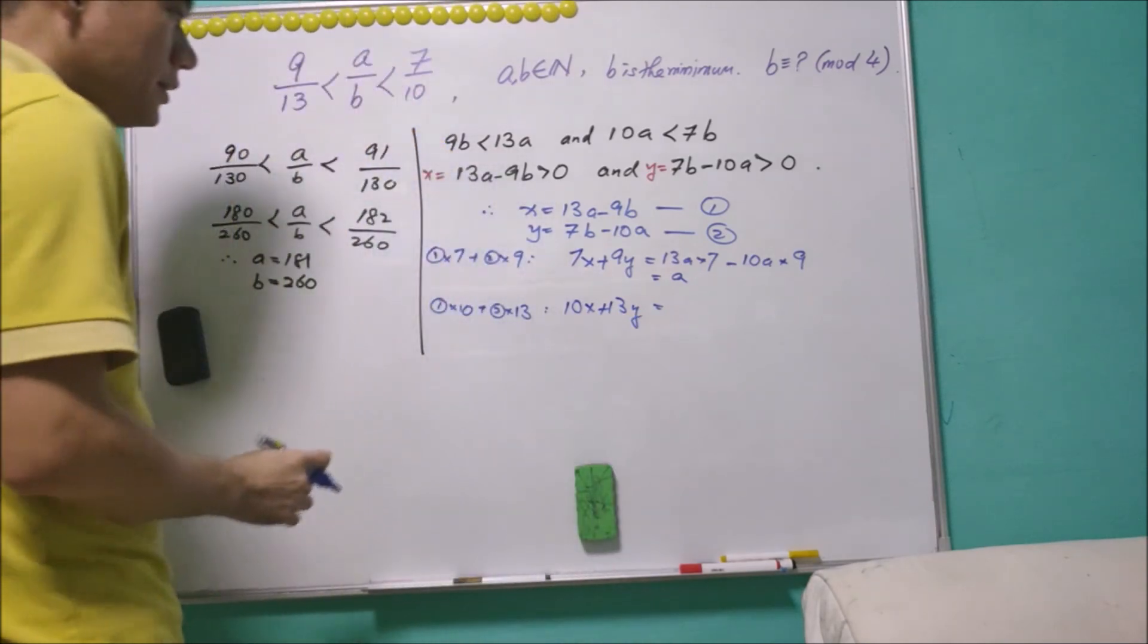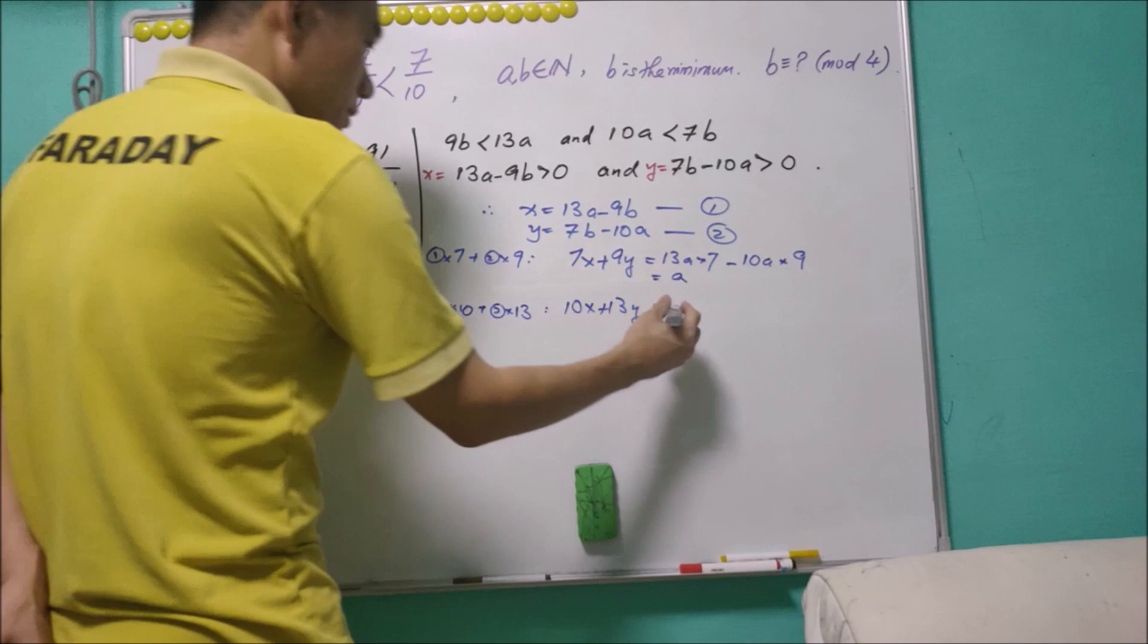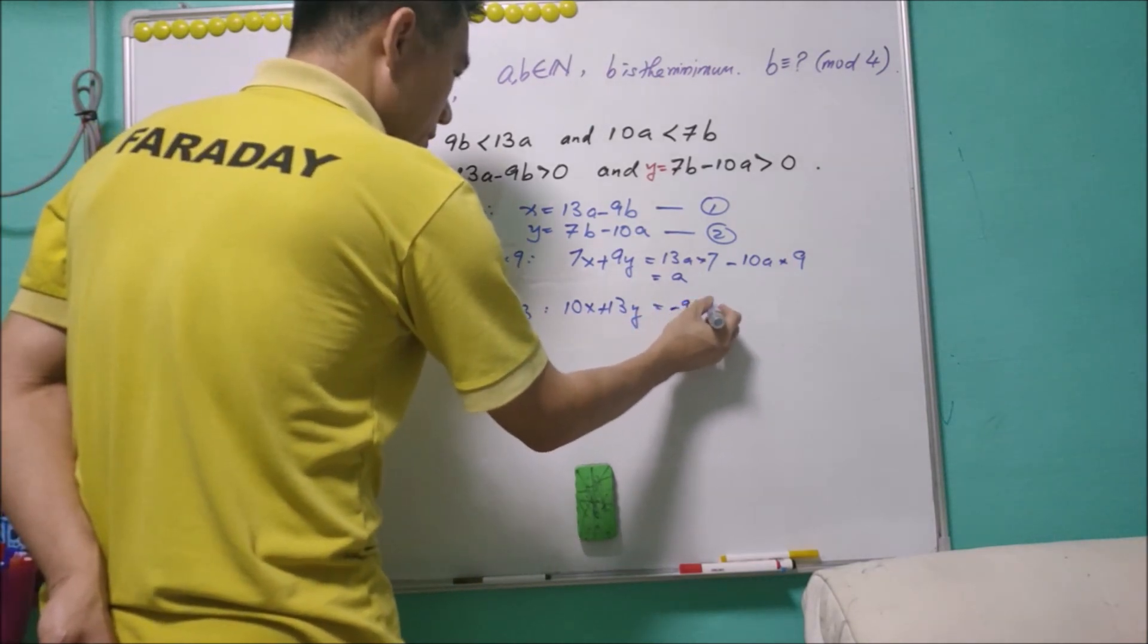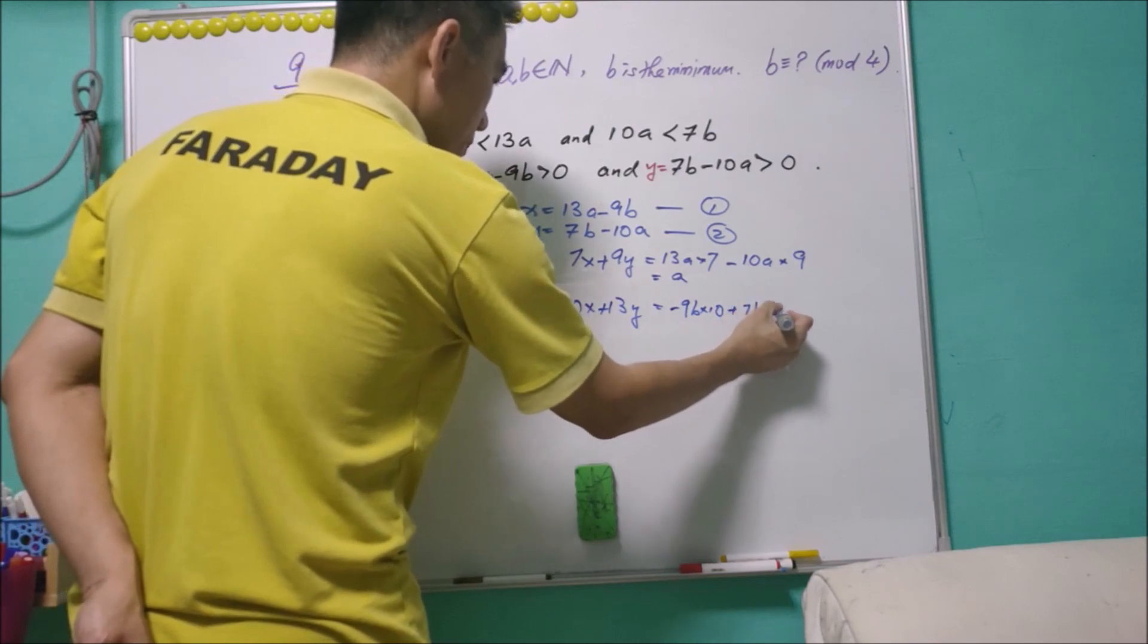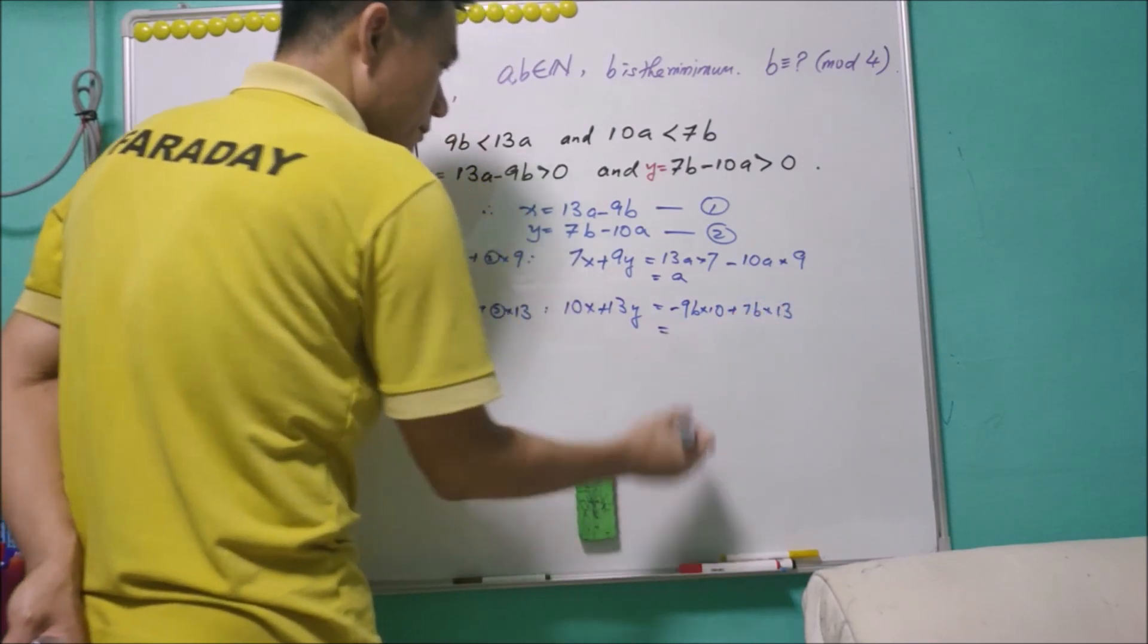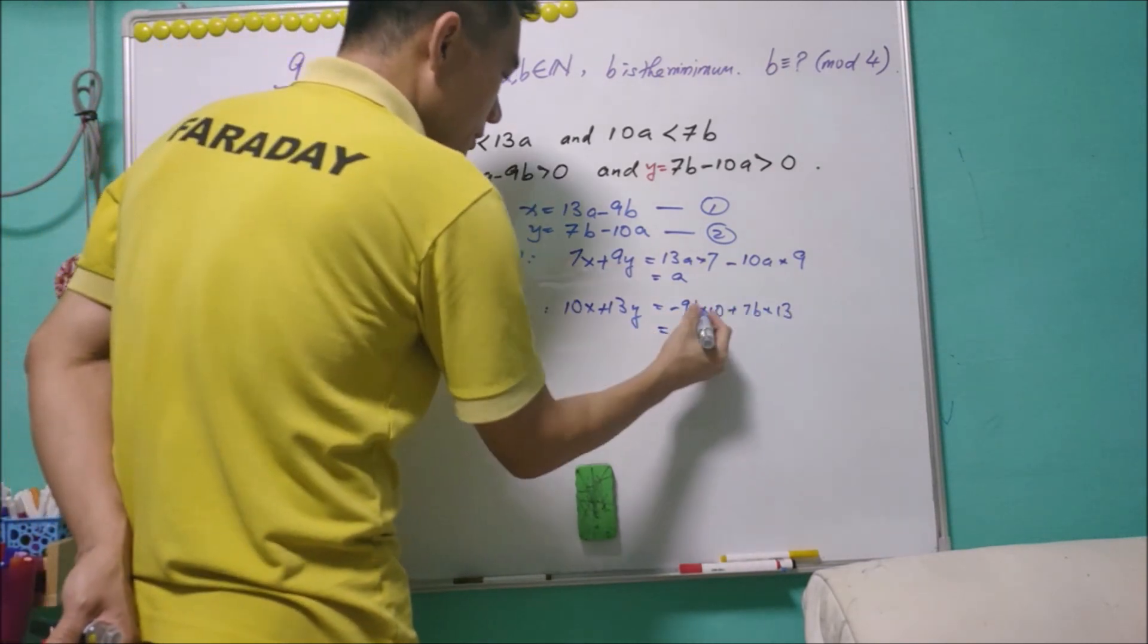Likewise, in this case you want to eliminate a. So this is -9b times 10 plus 7b times 13. This is -90, this is 91, so this is b equals 10x + 13y.